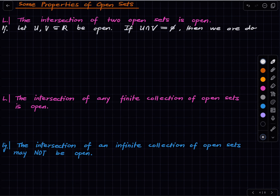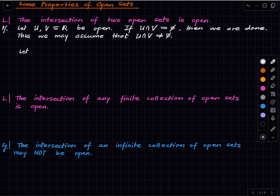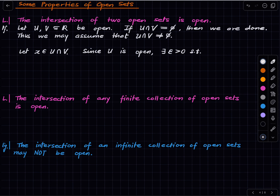So we may assume the intersection is not empty. Pick any point x in the intersection. We want to show the intersection is open, so we want to find a room around x contained in the intersection. Since U is open, there exists some epsilon > 0 such that (x − ε, x + ε) is contained in U.